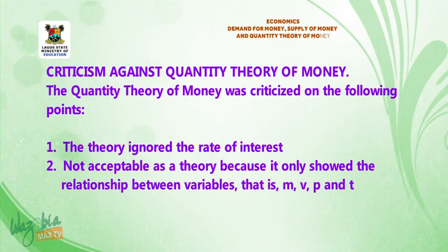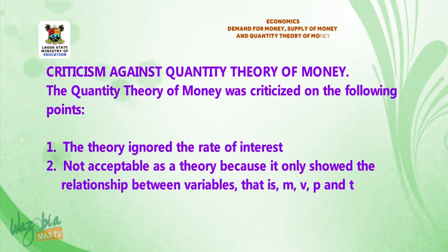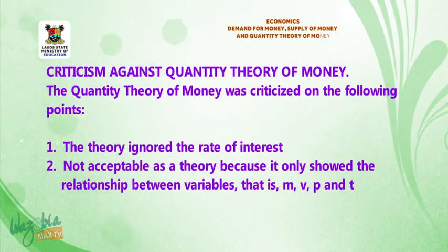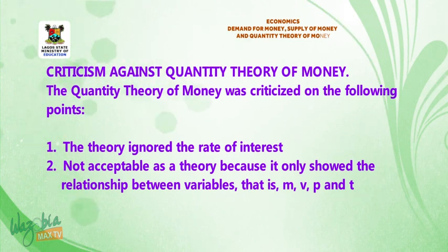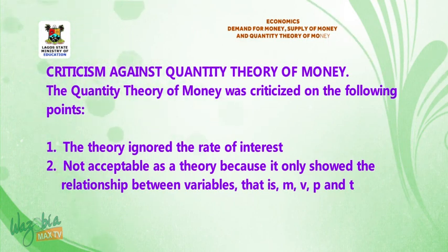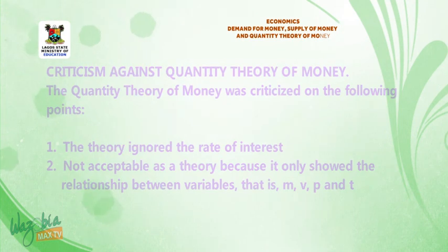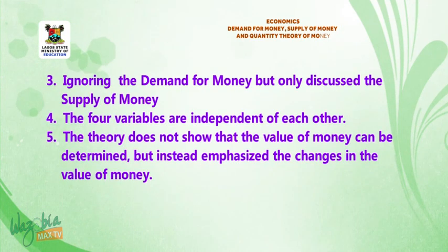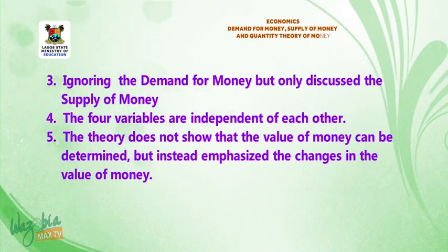Criticism against the quantity theory of money: The quantity theory of money was criticized on the following points. First, the theory ignored rates of interest. Second, it is not acceptable as a theory because it only showed the relationship between variables, that is the behavior of a variable T. Third, it ignored the demand for money but only discussed supply of money.